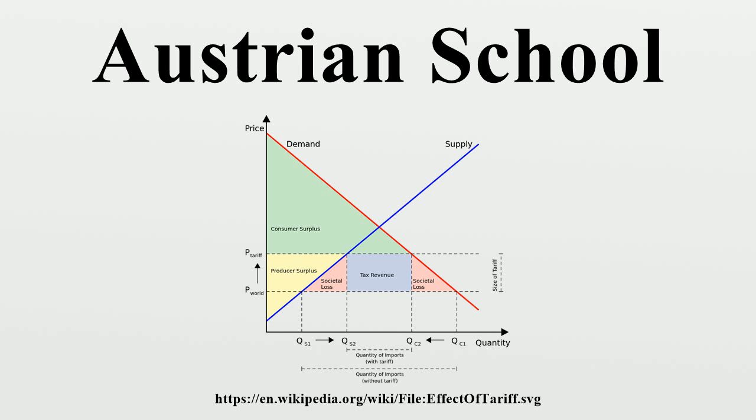The debate rose to prominence in the 1920s and 1930s, and that specific period of the debate has come to be known by historians of economic thought as the socialist calculation debate.